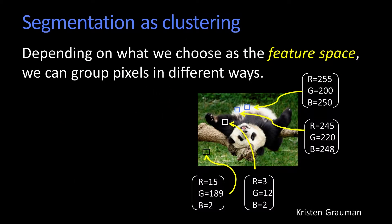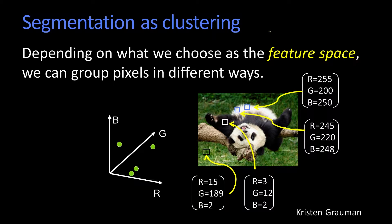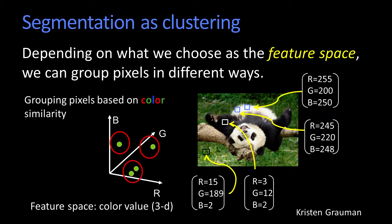So instead of clustering in just the intensity space, we can cluster in RGB space. This is notionally drawn here, where you can see that each point now belongs to a different color cluster. So you're grouping these pixels based upon their color — you're doing a quantization in three-dimensional space.